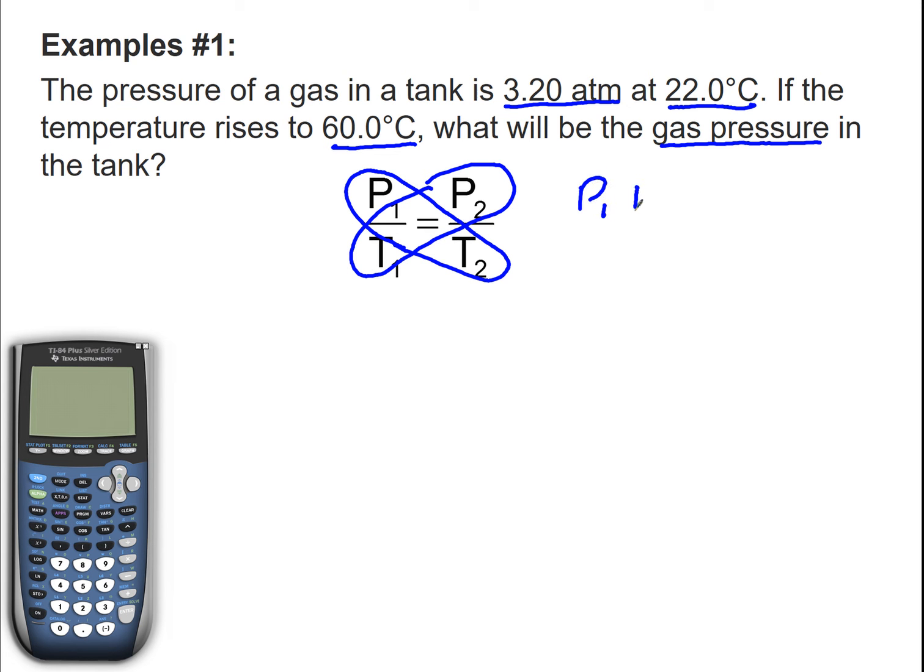So P1 times T2 equals P2 times T1. I'm going to make a list of variables. In this case, it's going to be pressure and temperature. So P1, T1, P2, T2. Pressure 1 is going to be 3.20 atm. And we have 22 degrees Celsius. P2 is what we're looking for, that's my X. T2 is going to be 60 degrees Celsius.